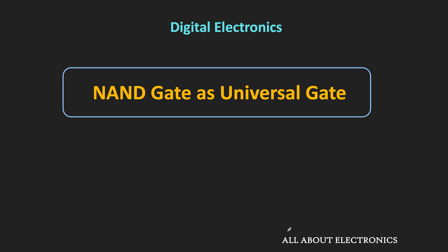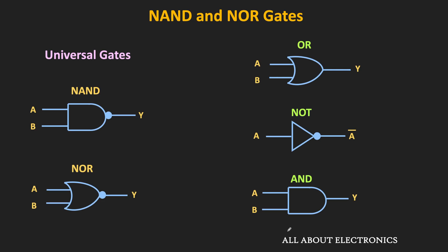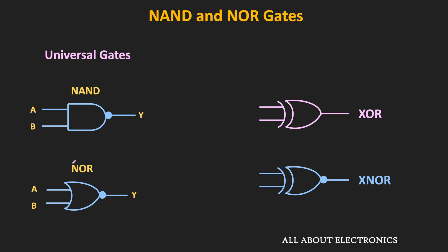Hey friends, welcome to the YouTube channel All About Electronics. So in this video, we will implement the different logic gates using the NAND gate. Now in the previous videos, we have seen that AND, OR and NOR gate are the three basic gates, while NAND and NOR gate are the universal gates. Because using any of these two gates alone, it is possible to implement any logic function — that is why these NAND and NOR gates are known as the universal gates.